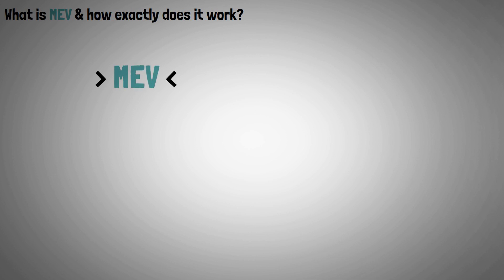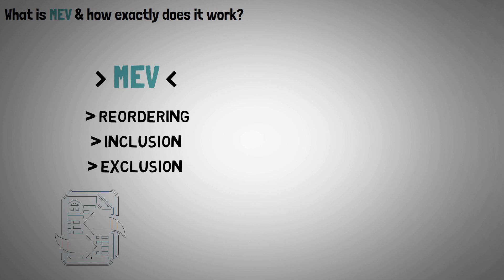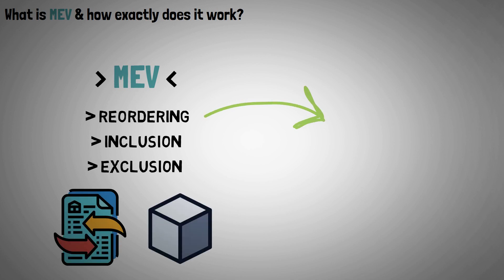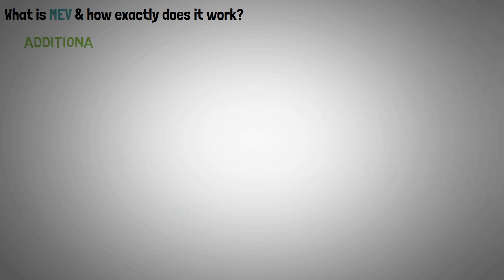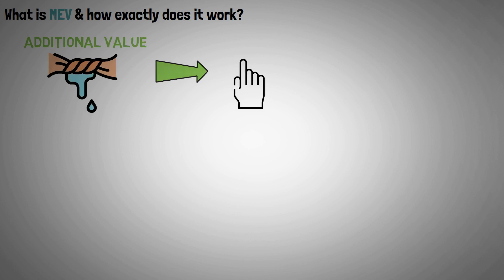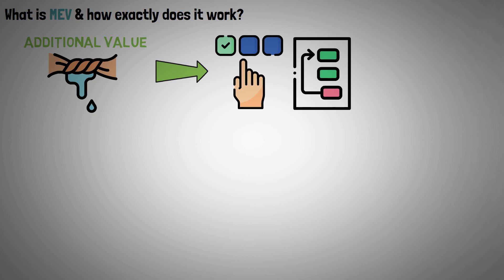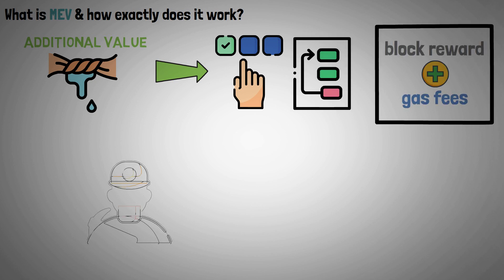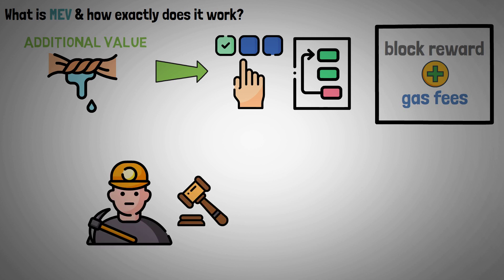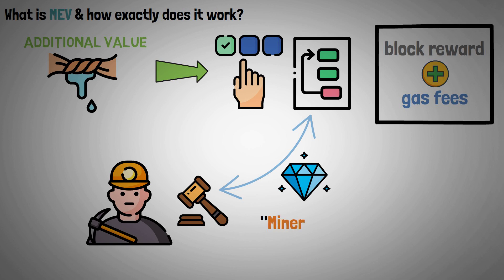MEV describes the deliberate reordering, inclusion, or exclusion of transactions when creating a new block in order to maximize profit. Consider it as the additional value that can be extracted from a block by selecting which transactions to include and in what order, beyond the usual reward and gas fees. Because miners had the authority to decide on transaction placement to extract more value, the term miner extractable value was created.